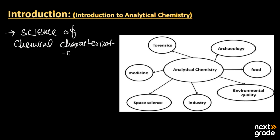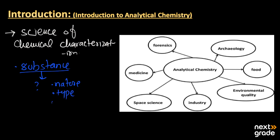What does chemical characterization mean? A complete chemical characterization of a compound or any substance — for example, if we have any substance and we don't know anything about it, how can we check its nature, its type, the number of atoms, molecules, its mass, and many other things? We can check all of this using the branch of chemistry known as analytical chemistry.